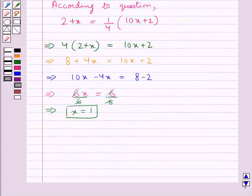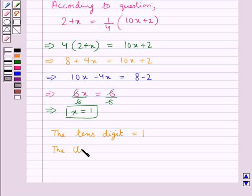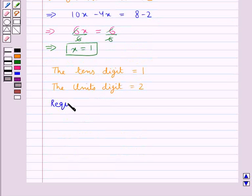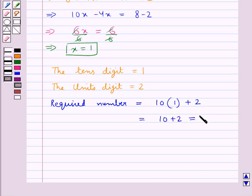Now we have assumed the tens digit to be X. So we get the tens digit is equal to 1 and we have already given the units digit as 2. So now the required number is equal to 12. So our final answer is 12 is the required number.